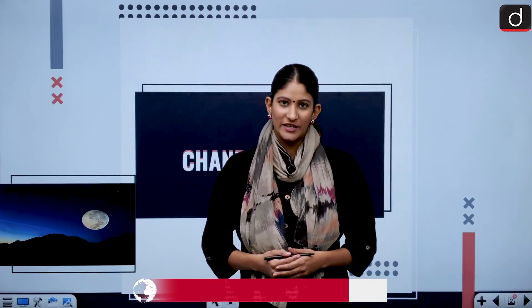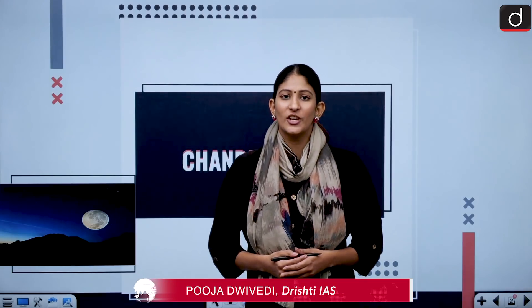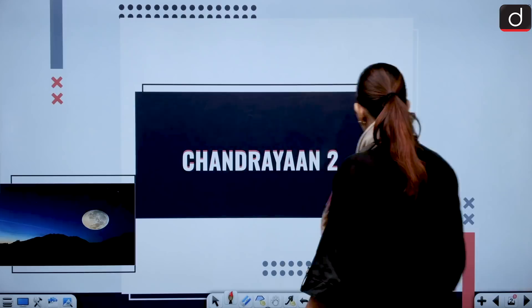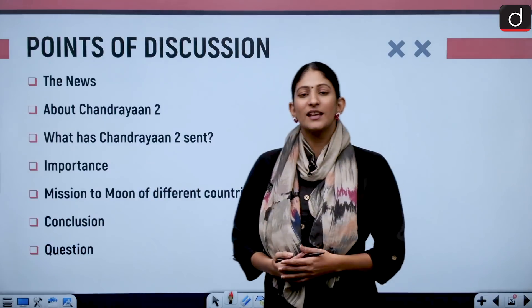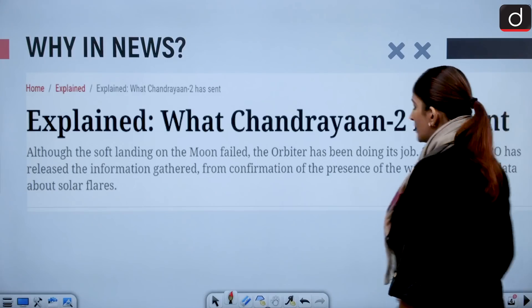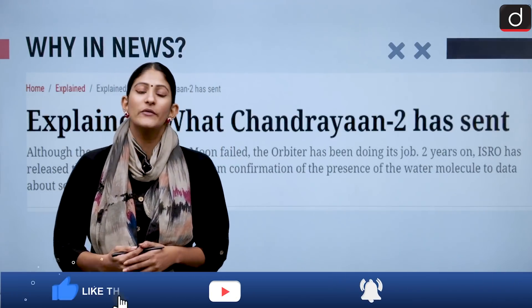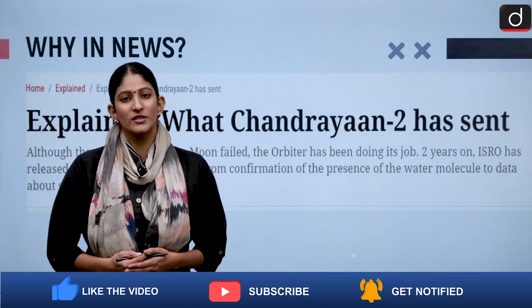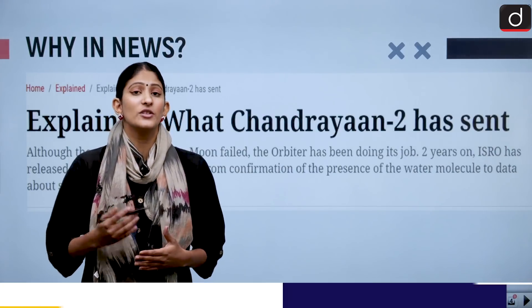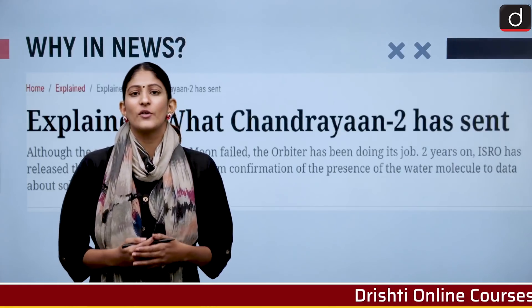Hello and welcome to the new series of Drishti IAS. I am Pooja Divedi and in this segment today, we are going to discuss about Chandrayaan 2. This topic is important from the perspective of prelims and also from the perspective of GS Main's paper. The orbiter of Chandrayaan has sent us some information which will be enabling human generations to have a lot of information for future lunar as well as extraterrestrial exploration.